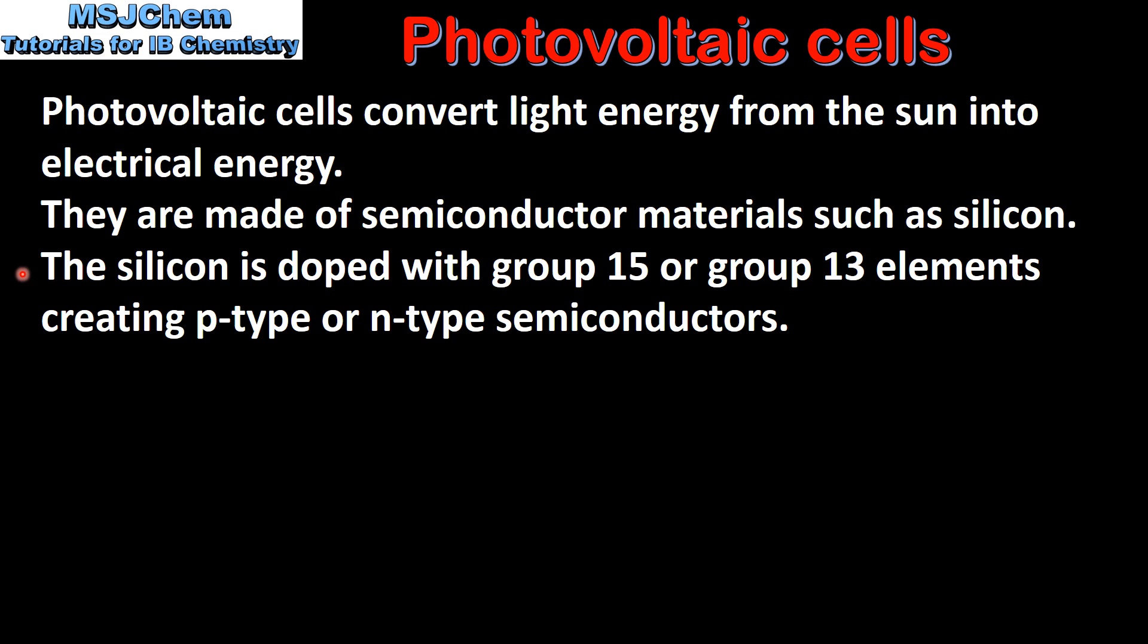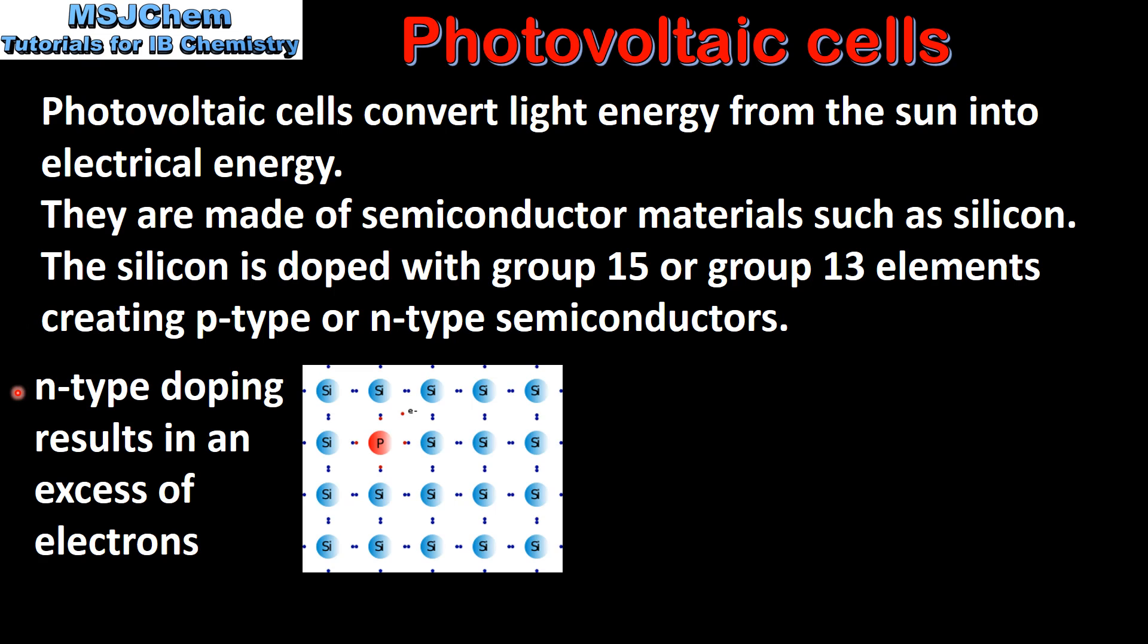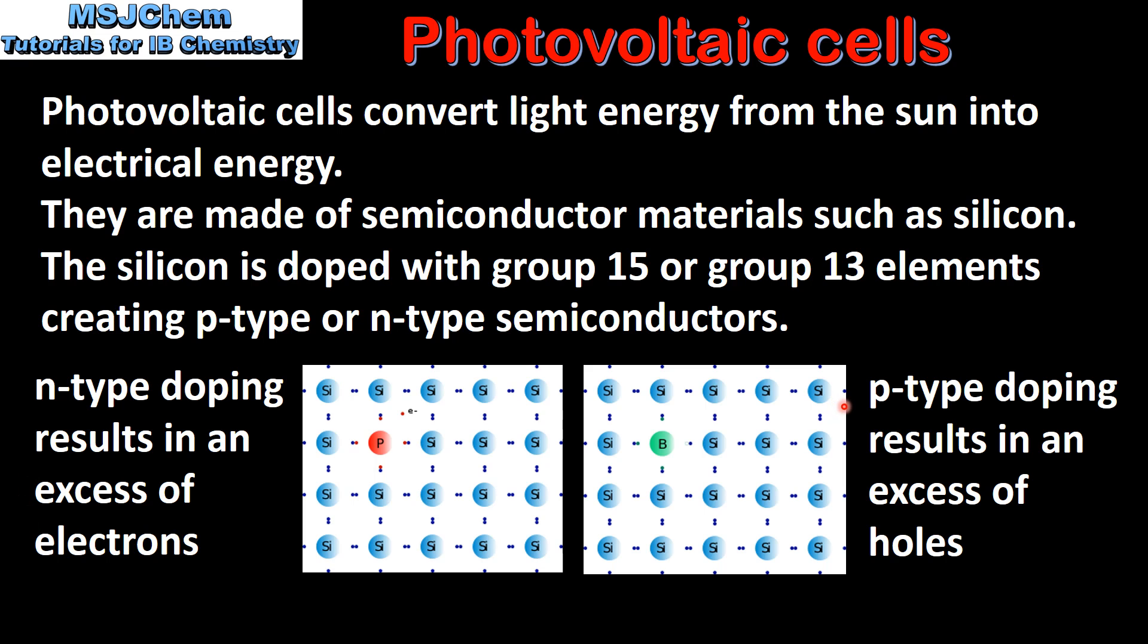The silicon is doped with group 15 or group 13 elements, creating p-type or n-type semiconductors. As we saw in a previous video, n-type doping results in an excess of electrons and p-type doping results in an excess of holes.